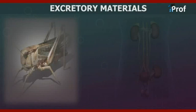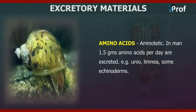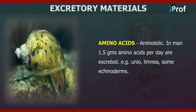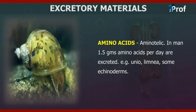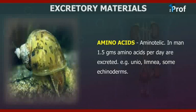Another excretory material is amino acids. Those animals that excrete amino acids are called aminotelic animals. In humans, 1.5 grams of amino acids per day are excreted. Other examples of aminotelic animals include Lumbricus, Lamnia, and some echinoderms.